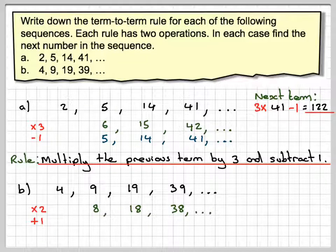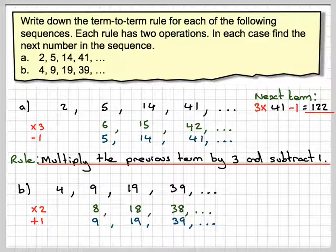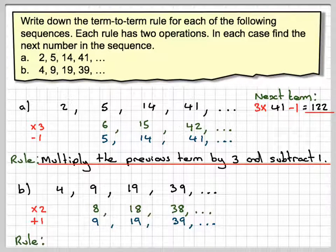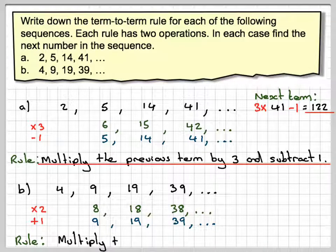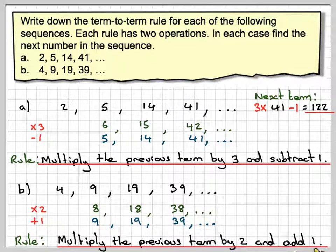Now if I add 1, so 8 plus 1 will give me 9. 18 plus 1 gives me 19, and then 38 plus 1 gives me 39. So it looks like the rule will be multiply the previous term by 2 and then add 1.